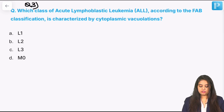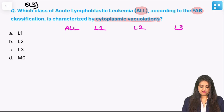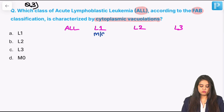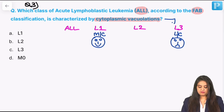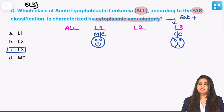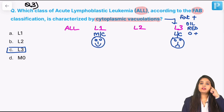Moving on to question 3: which class of ALL (acute lymphoblastic leukemia) according to FAB will show cytoplasmic vacuolation? Per FAB classification we have ALL L1, L2, L3. L1 is the most common and has the best prognosis; L3 is the least common and has the worst prognosis. From a microscopy point of view, cytoplasmic vacuolations are seen in ALL L3. The reason for vacuolations is fat, and those blasts are positive for oil red O — also a previous year exam question.